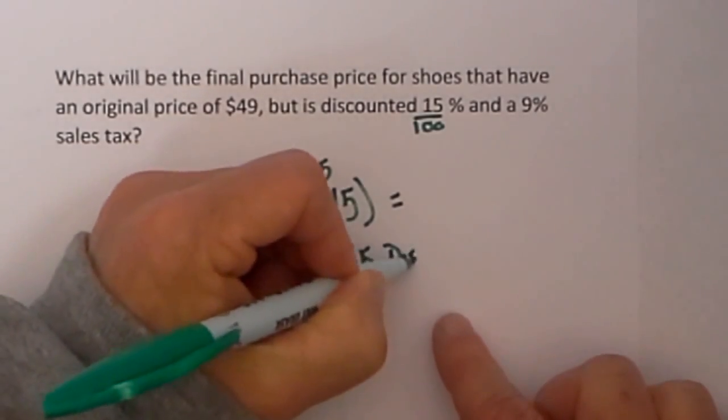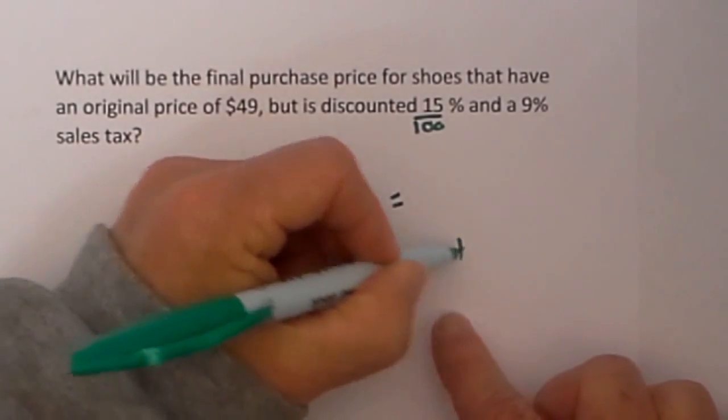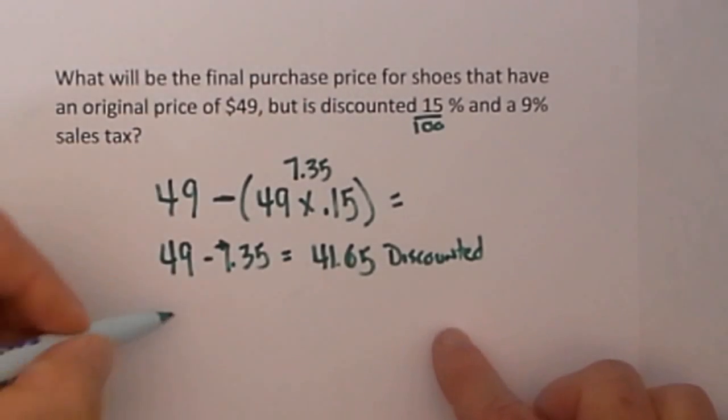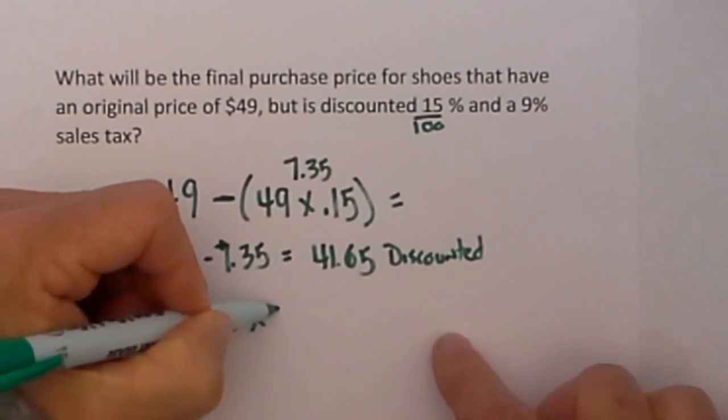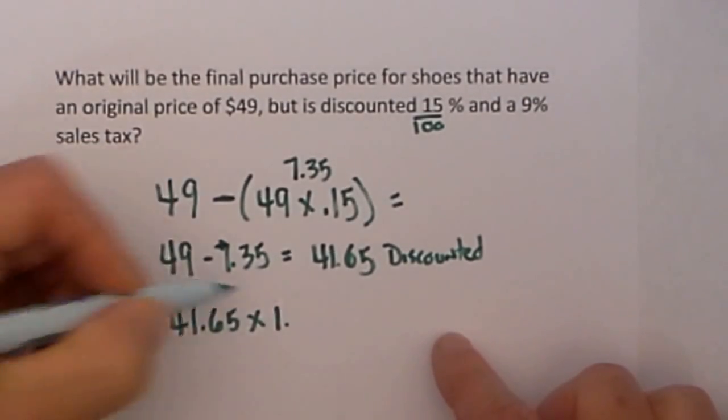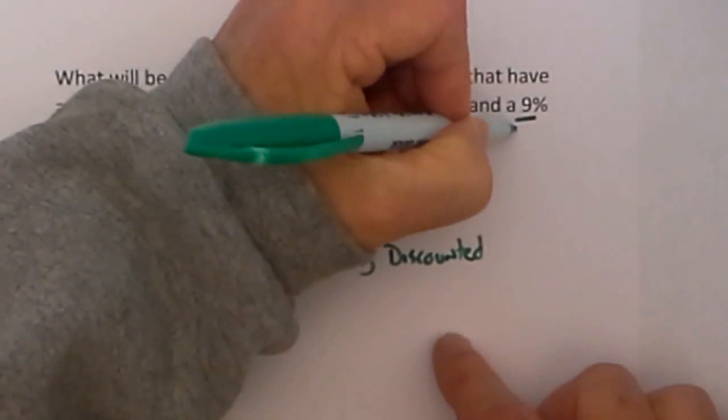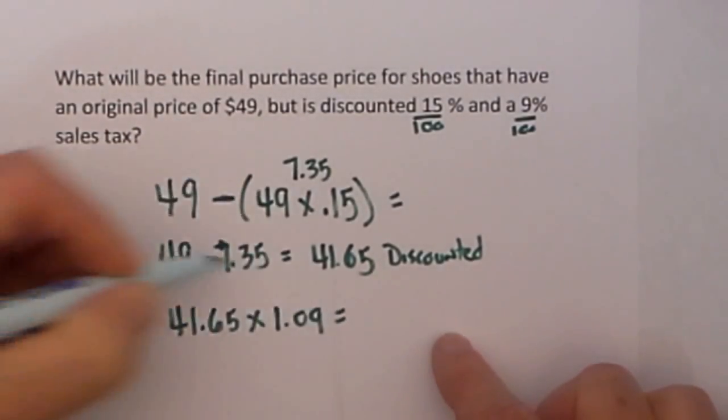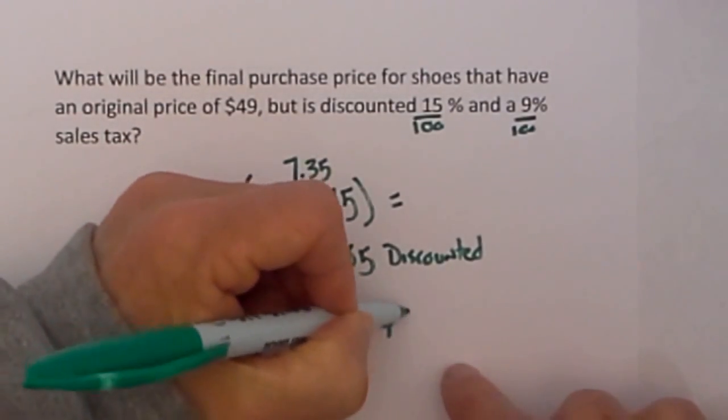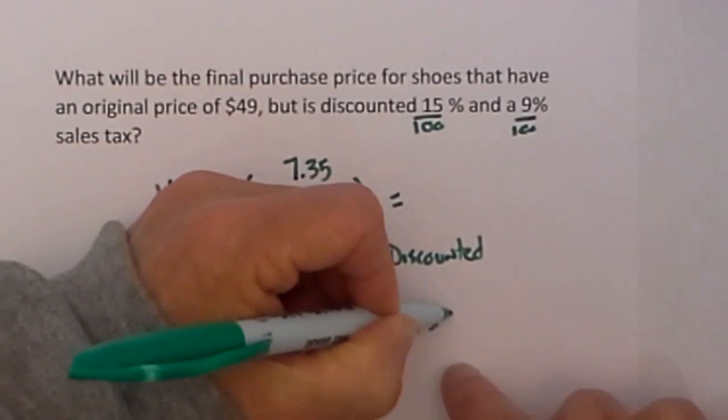So I then take $41.65 and multiply it by 1 plus 9% sales tax. 9 divided by 100 is 0.09 and that will give me a final purchase price of $45.39.